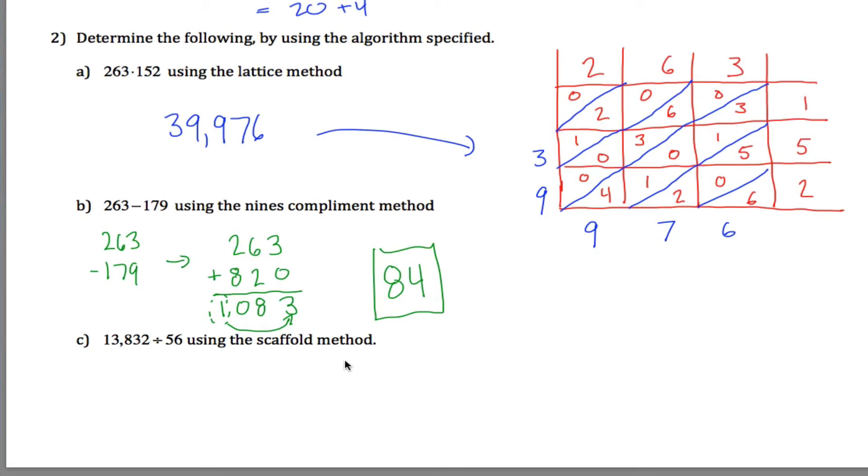And then do this division problem using the scaffold method. Hopefully, I chose this to work out with no remainder. I think I did. But let's see. So you got 13,832 divided by 56. So the idea with the scaffold method is you're just trying to take out chunks of 56. So how many 56's are there in this number? Well, I don't know, but there's certainly at least 100 of them. How do I know there's 100? Well, 100 times 56 would be 5, 6, 0, 0. So I could take out 100 of them. I'd be taking out this number. And if I subtract, I'll still have more to do.